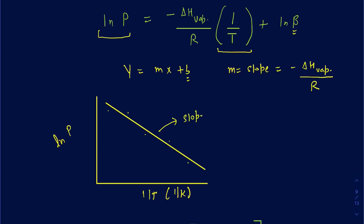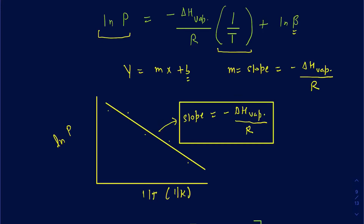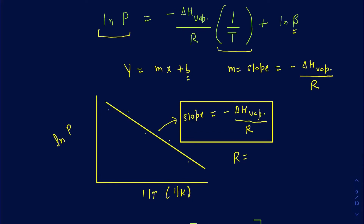This slope can be used to figure out the value of delta H vaporization for a particular liquid, because delta H vaporization is different for different liquids based on their intermolecular forces. They may give you enough information to plot the data, or just give you the slope, and using the slope you can figure out delta H vaporization if you know R. The value of R is the gas constant: 8.314 joules per mole per Kelvin — the energy form.